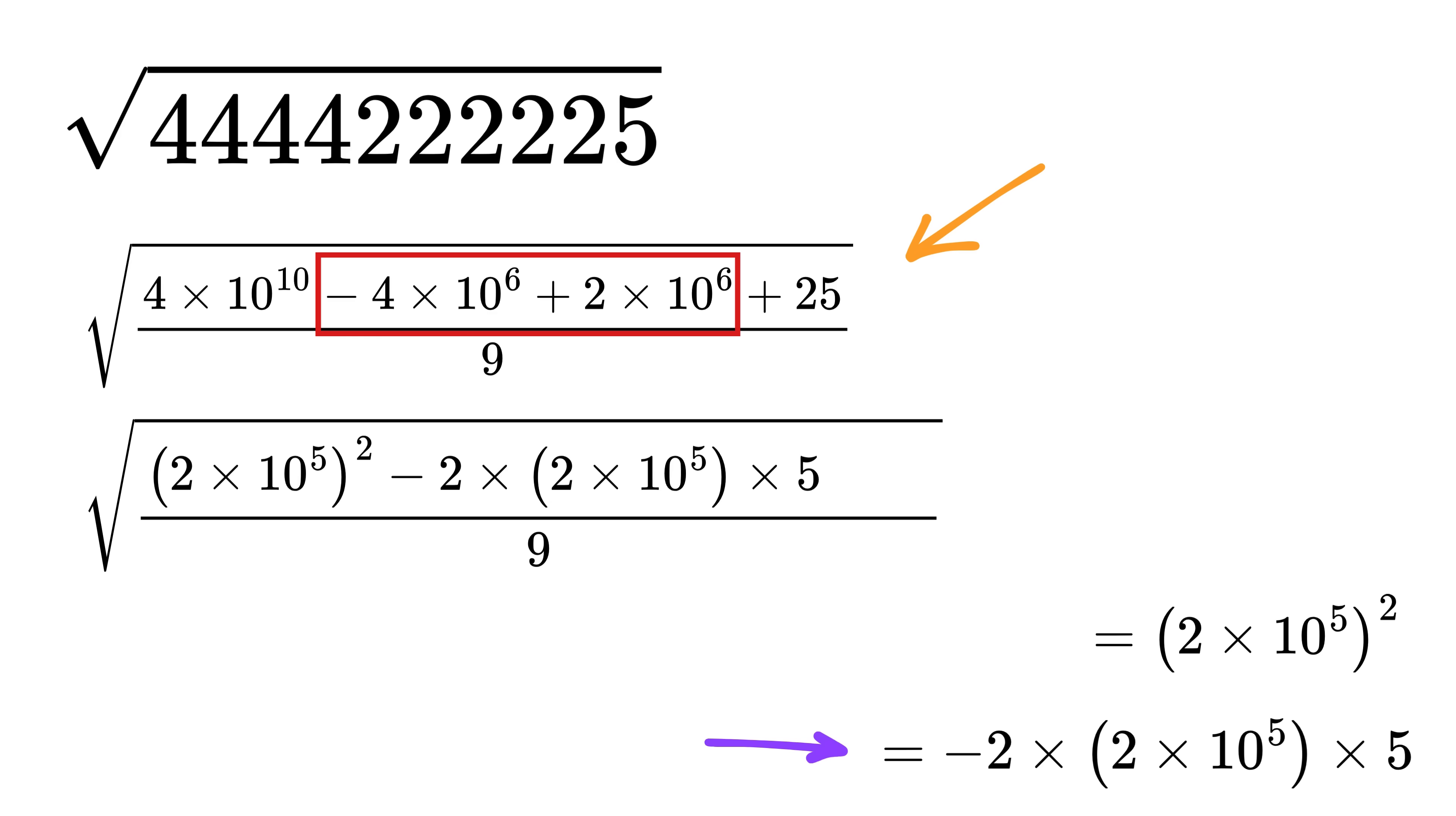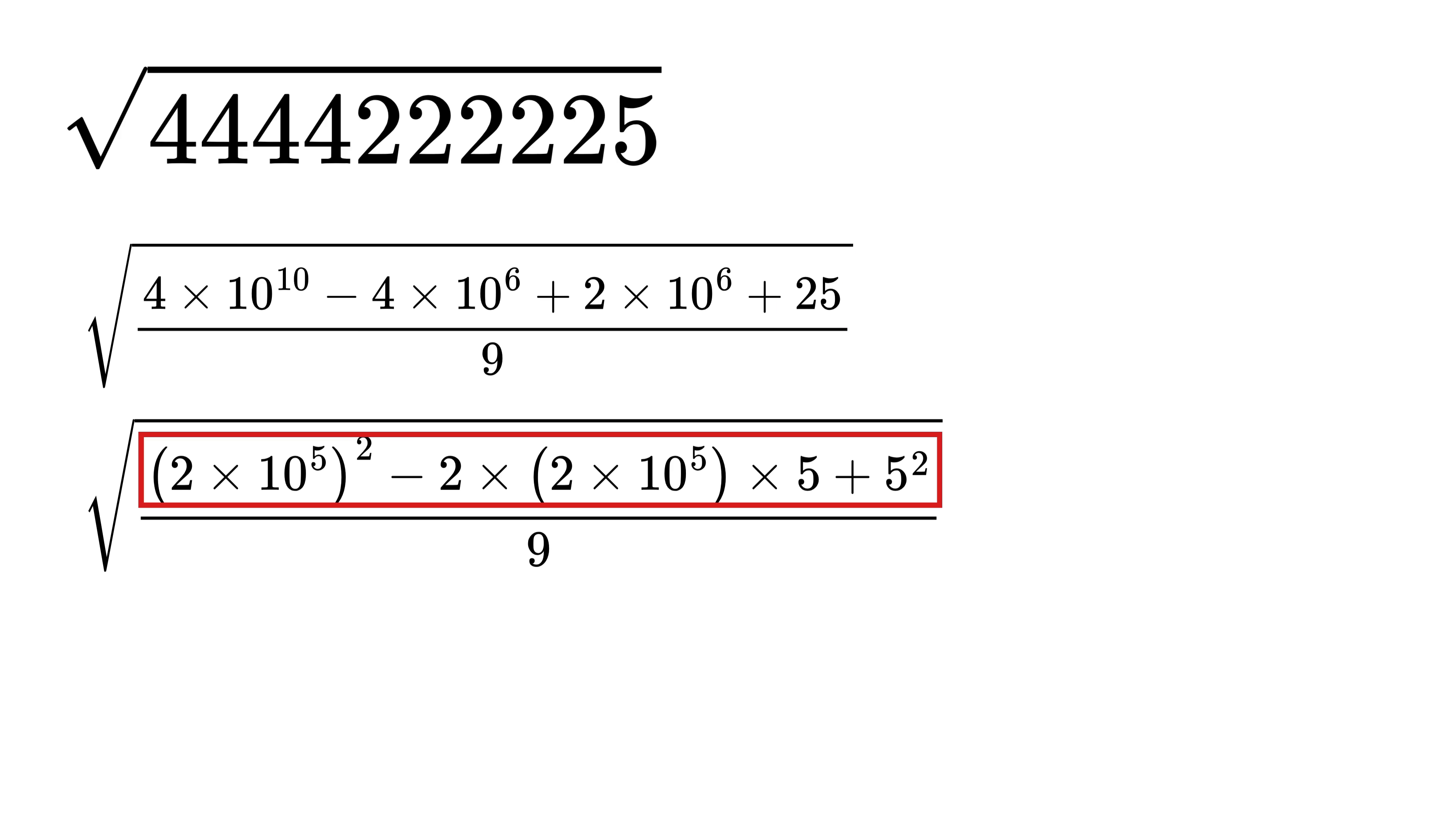Now also rewrite this 25 as 5 squared. Oh my god, can you notice something? This is nothing but a squared minus 2 times ab plus b square, which is equal to a minus b whole square.